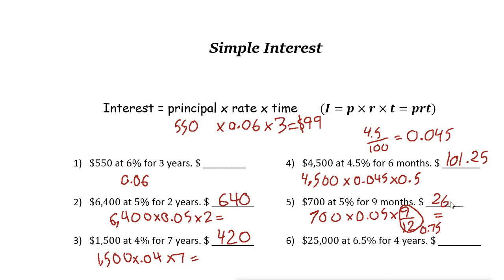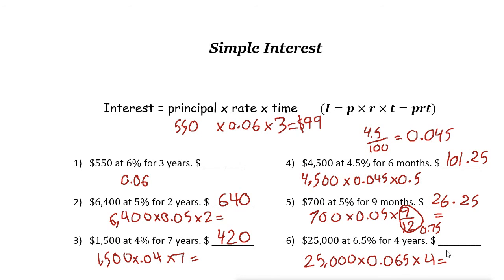Last one: twenty-five thousand dollars at six point five percent — that's 0.065 — for four years. Use a calculator: twenty-five thousand times 0.065 times four. The answer is six thousand five hundred dollars.